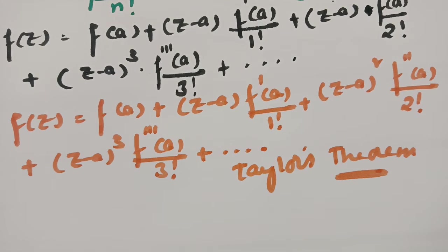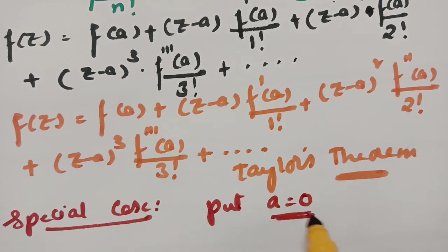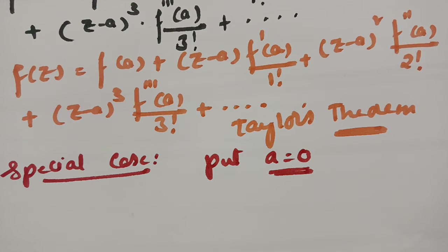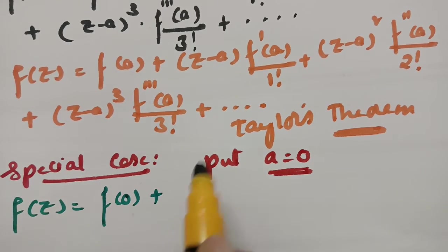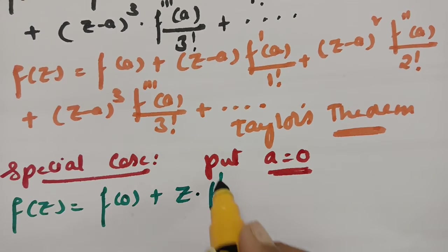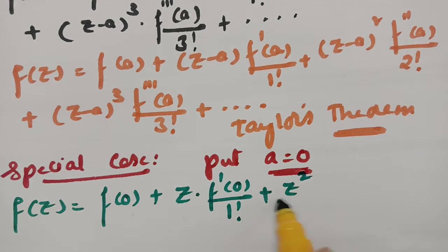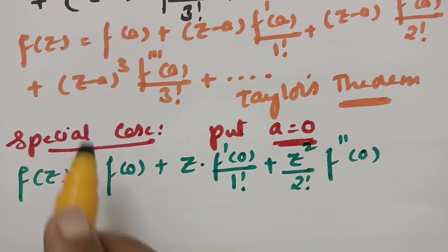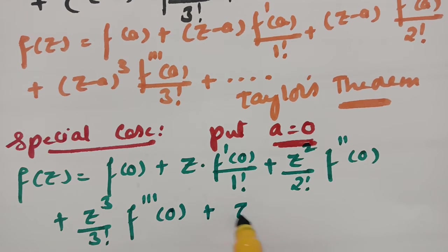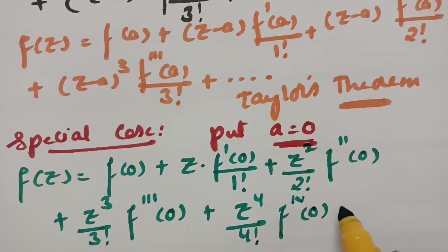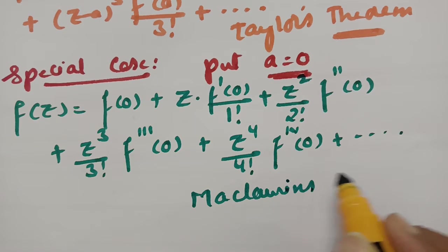I will show you a special case. In the special case, put a equal to 0 in Taylor's theorem. Then f of z equals f of 0, plus z into f dash of 0 by 1 factorial, plus z squared by 2 factorial into f double derivative of 0, plus z cubed by 3 factorial into f triple dash of 0, plus f to the power 4 by 4 factorial into f fourth derivative of 0, plus and so on. This is nothing but McLaurin's theorem.